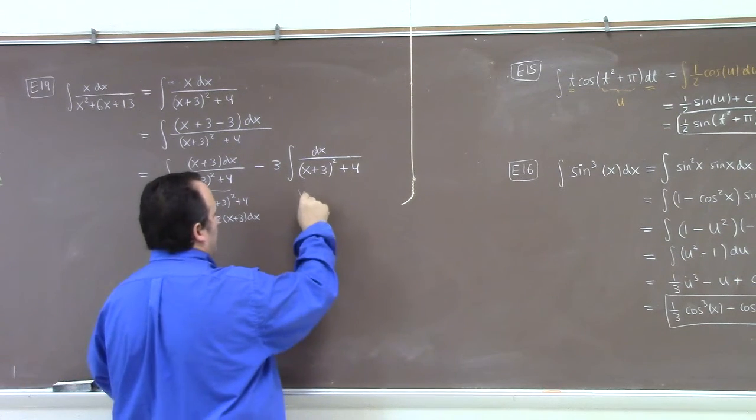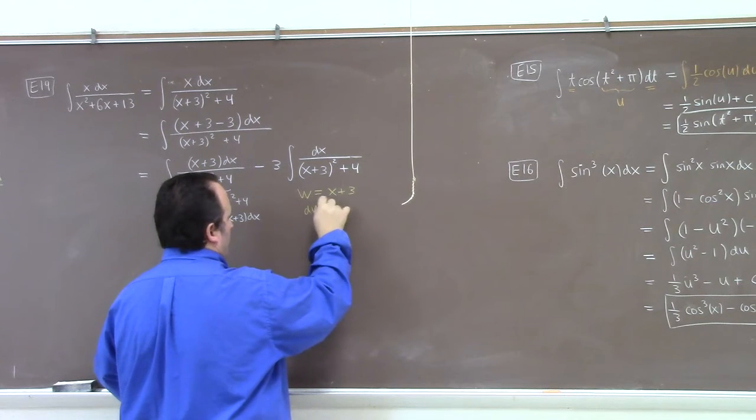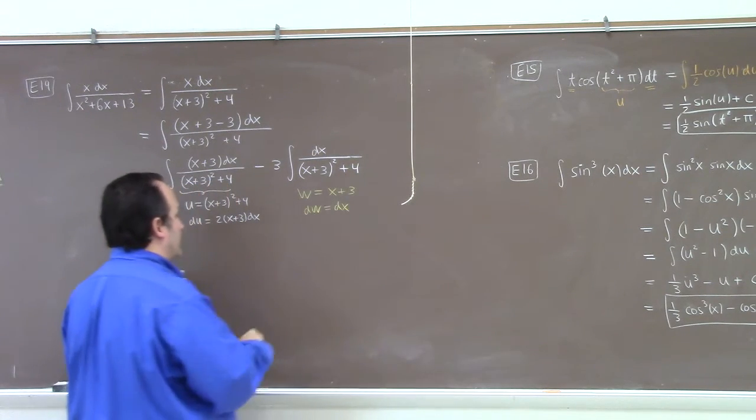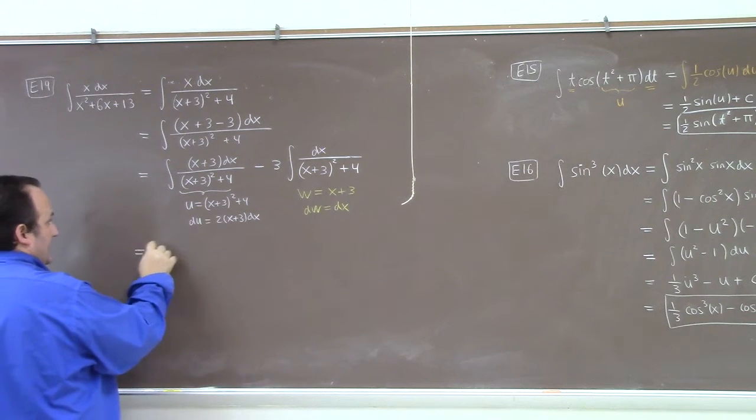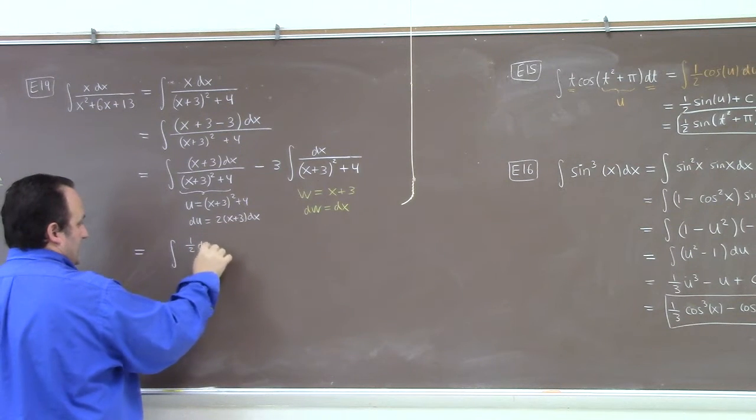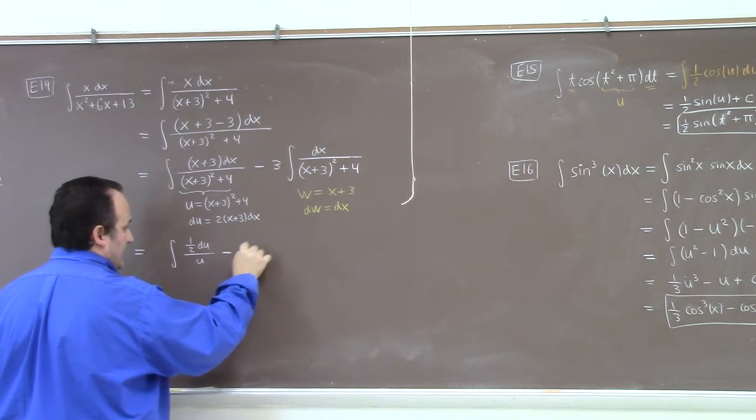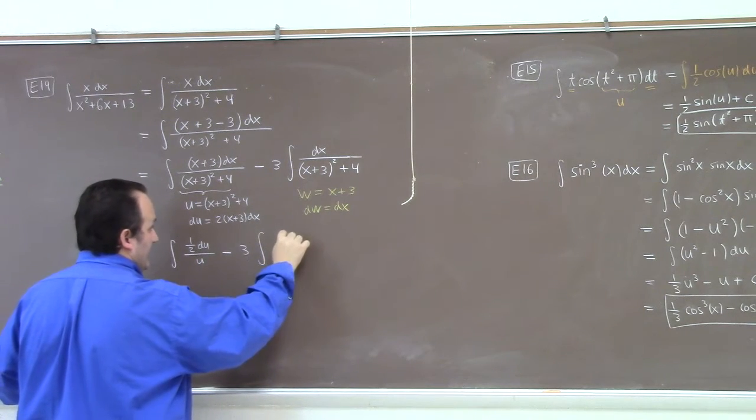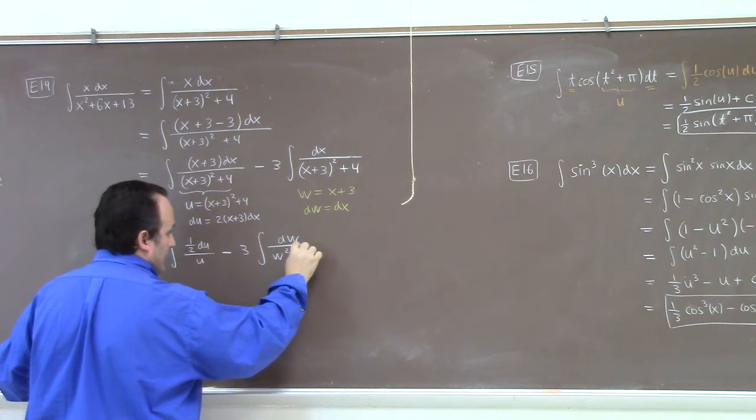And if I'm making two substitutions, I'll use u for one and like w for the other or whatever. Over here, I'll let w equal to x plus 3, right? So dw is dx. And so with those two substitutions in mind, what we have is the integral of 1 half du divided by u for the first integral minus 3 times the integral of dw over w squared plus 4.